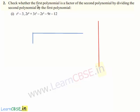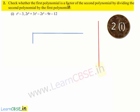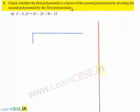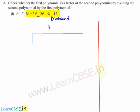Coming to the second problem: check whether the first polynomial is a factor of the second polynomial by dividing the second polynomial by the first polynomial. The second polynomial becomes the dividend and the first polynomial becomes the divisor. If we get remainder 0 on division, we say that the first polynomial is a factor of the second polynomial.